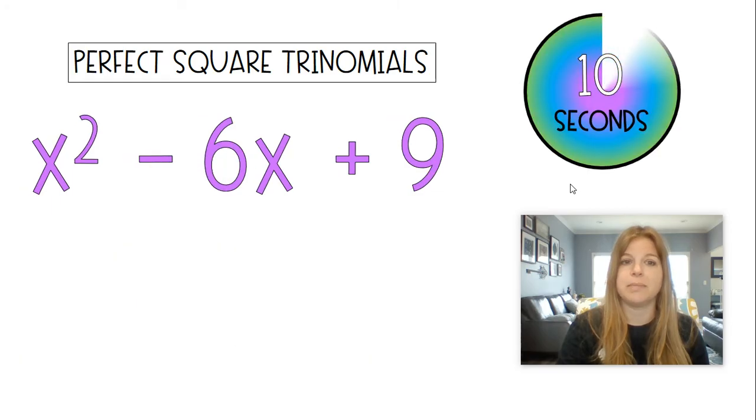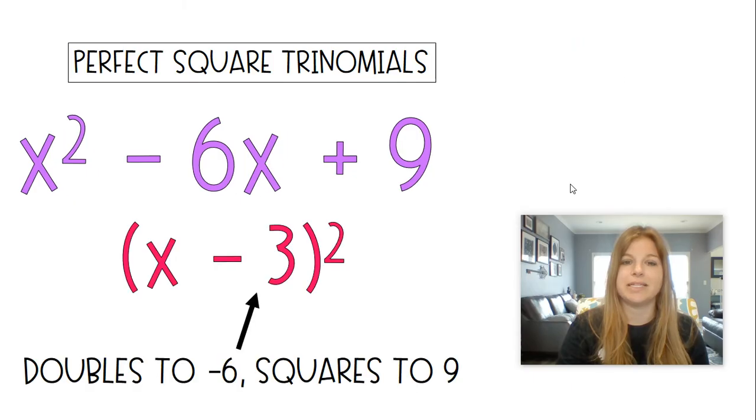x squared minus 6x plus 9. Done? x minus 3 squared. Negative 3 doubles to get negative 6 and it squares to get positive 9. Next one.